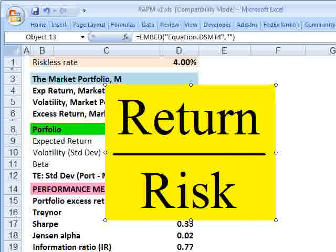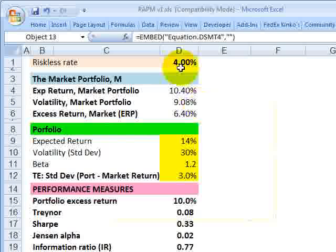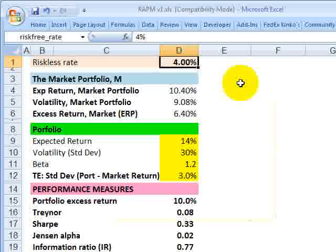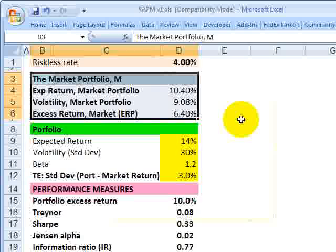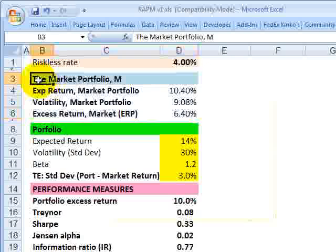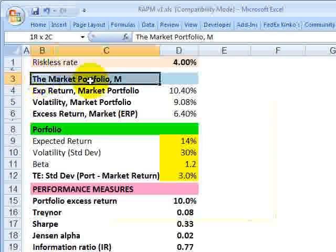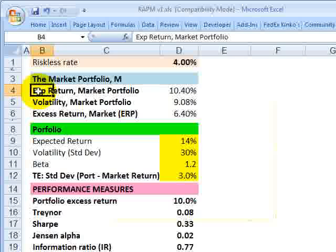As usual, I need some assumptions in order to do that. I'll assume the riskless rate is 4%. Then I need some assumptions about the total market portfolio. Yesterday, we looked at the capital market line and security market line. We saw that in theory, the market portfolio is the portfolio that includes all of the risky assets. We need these for three of the five measures, specifically the Treynor, the Jensen's alpha, and the information ratio.